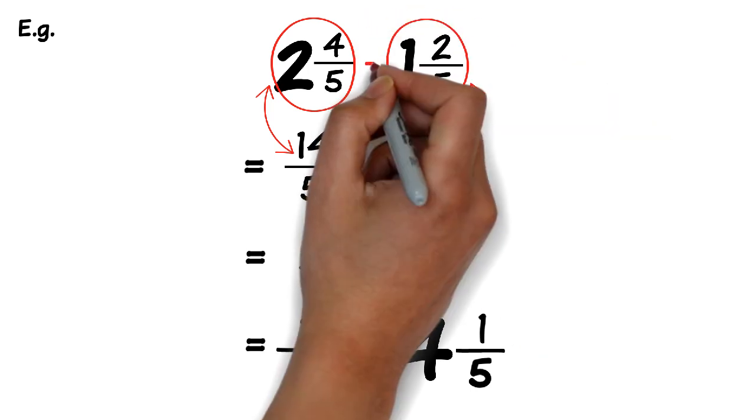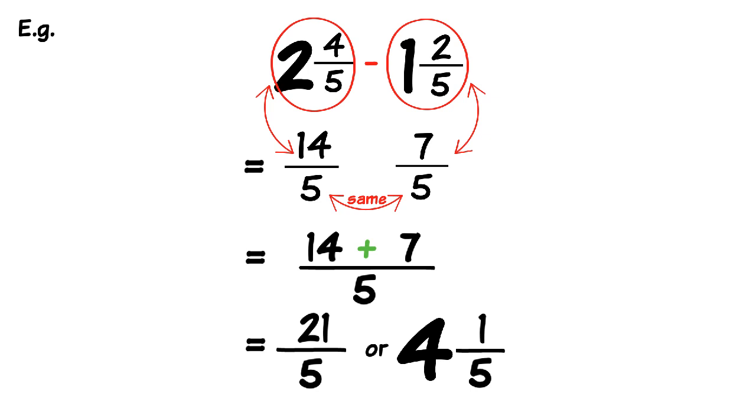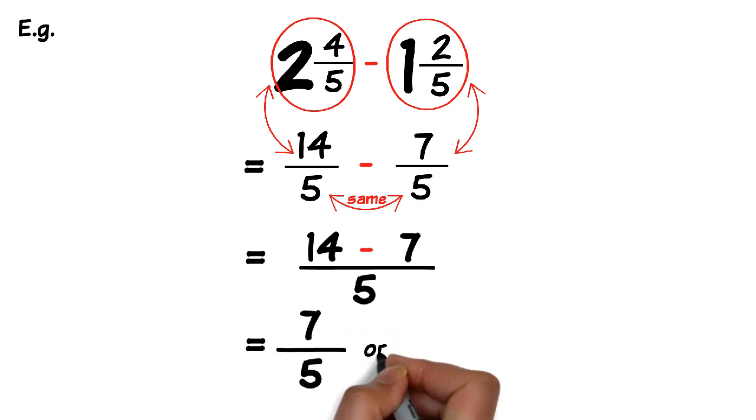What if we were to subtract these fractions instead? So instead of 14 over 5 plus 7 over 5, we had 14 over 5 take away 7 over 5. In which case the denominator would still be the same. Over 5. And the new numerator would be 14 take away 7, which is 7. So the new fraction would be 7 over 5. Or as a mixed number 1 and 2 fifths.